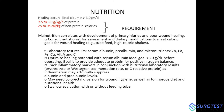Laboratory tests including serum albumin, prealbumin, and micronutrients — zinc, calcium, and iron — should be monitored and addressed. Wound healing potential will only be optimal when serum albumin is more than 3 g/dL before operating. Inflammatory markers such as C-reactive protein and ESR should also be tracked as supportive lab results.